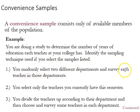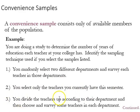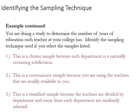You could randomly select two different departments and survey each teacher in those departments. You could select only teachers you currently have this semester, but that would probably skew things towards the type of major you're taking. Or you could divide teachers up according to their departments and choose and survey some teachers in each department, perhaps randomly selecting within departments. There are ways to try to add randomness, and the more randomness we have in our sampling methods the better. Those methods we just mentioned involve examples of cluster sampling, convenience sampling, and stratified sampling. Thanks for watching.